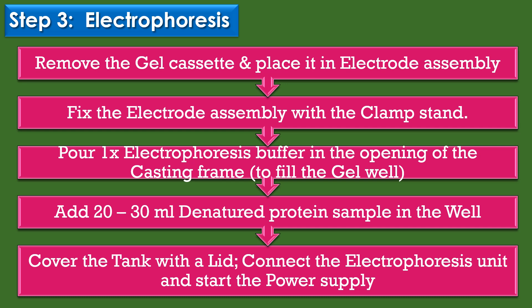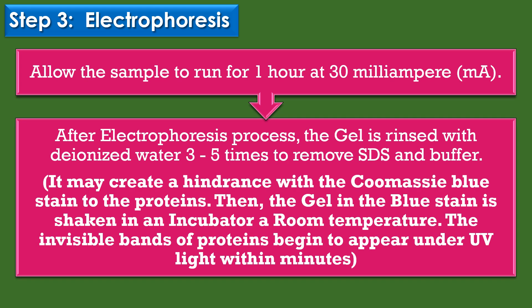The third step is electrophoresis. Remove the gel and place it in the electrode assembly, then fix the assembly with a clamp stand. Pour 1x electrophoresis buffer into the casting frame, and add 20 to 30 µL of denatured protein sample in the wells using a pipette. Cover the tank with a lid, connect the electrophoresis unit, and start the power supply. Allow the sample to run for 1 hour at 30 mA. After electrophoresis, rinse the gel with deionized water 3–5 times to remove SDS and buffer, then shake the gel in Coomassie blue stain in an incubator at room temperature. The protein bands begin to appear under UV light within minutes.